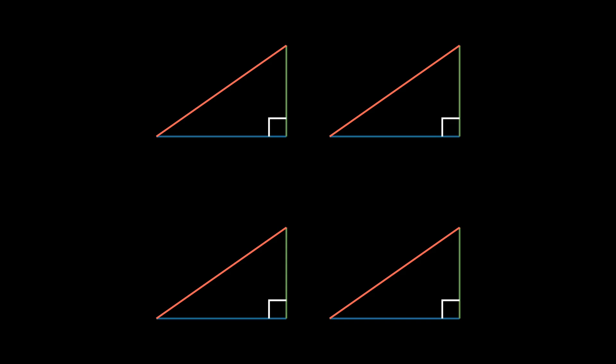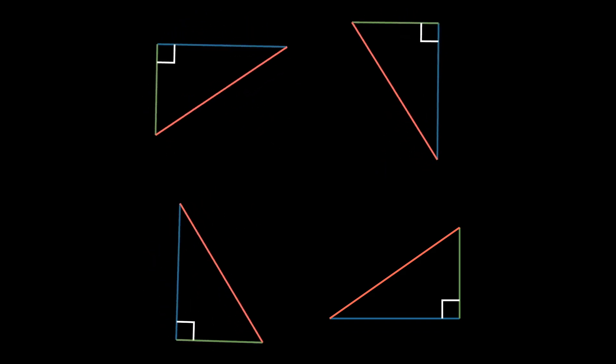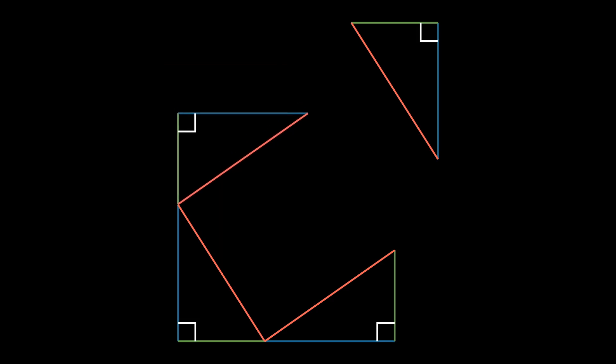To do this, we take four copies of any right triangle, and then we flip them to create the following image. Then, we want to arrange them in a way like so to form a square.